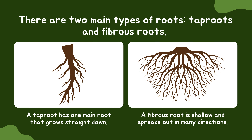There are two main types of roots: taproots and fibrous roots. A taproot has one main root that grows straight down. A fibrous root is shallow and spreads out in many directions.